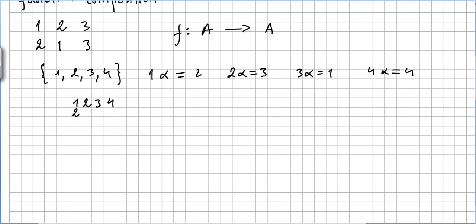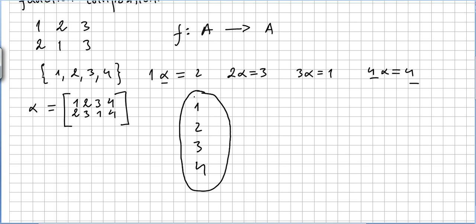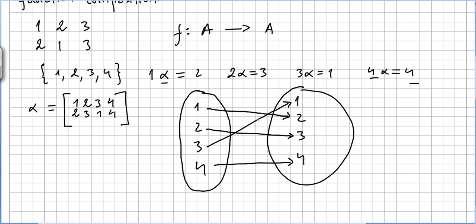So in array notation, alpha maps 1 to 2, 2 to 3, 3 to 1, and 4 to 4. We write the top row as {1, 2, 3, 4} and the bottom row as {2, 3, 1, 4}, which represents the permutation alpha.